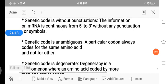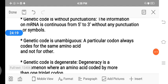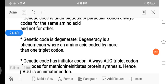Then the genetic code is unambiguous. That is, a particular codon always codes for the same amino acid and not for others. A particular codon always codes with the same amino acid. A specific type of triplet codon is able to bind or code the specific type of amino acid, not other amino acids. Then the genetic code is degenerate. Degeneracy is a phenomenon where an amino acid is coded by more than one triplet codon. There is one amino acid able to be coded by more than one triplet codon.